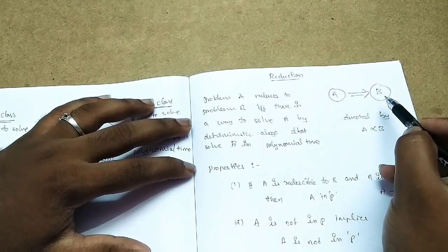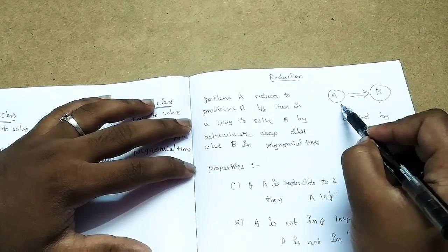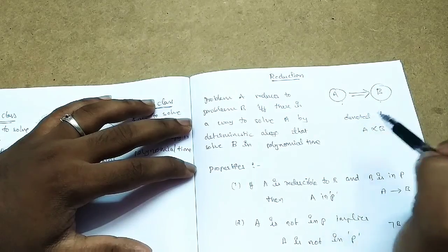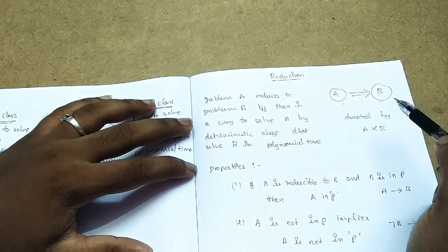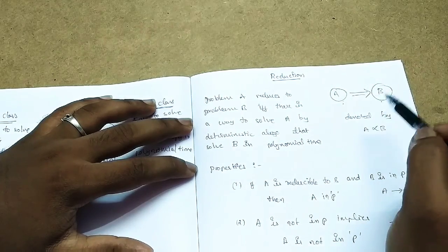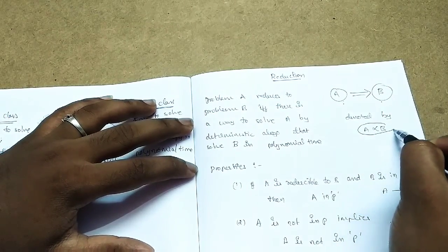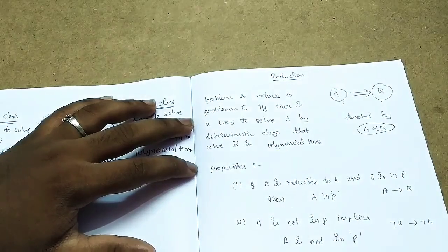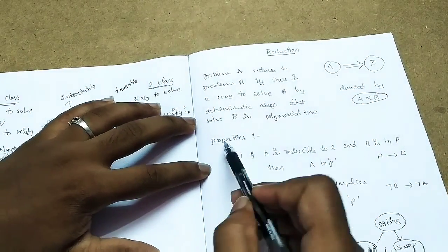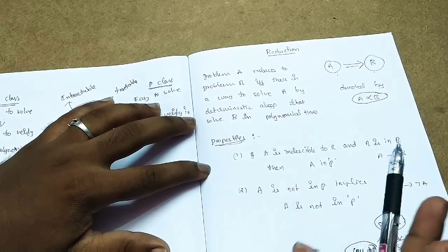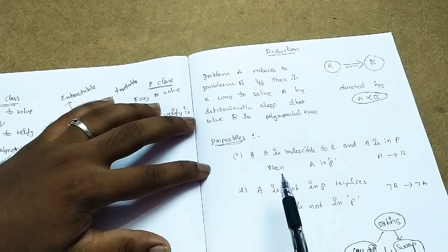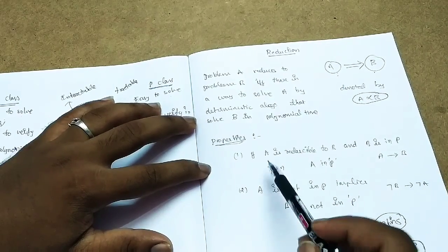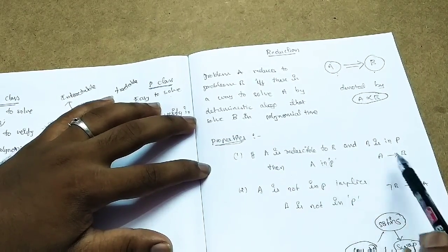I already know problem B. If I have an algorithm for B, I can reduce problem A to that algorithm. So A is reduced to B. A is the new problem and B is the already-known problem. You use the properties of B to solve A.